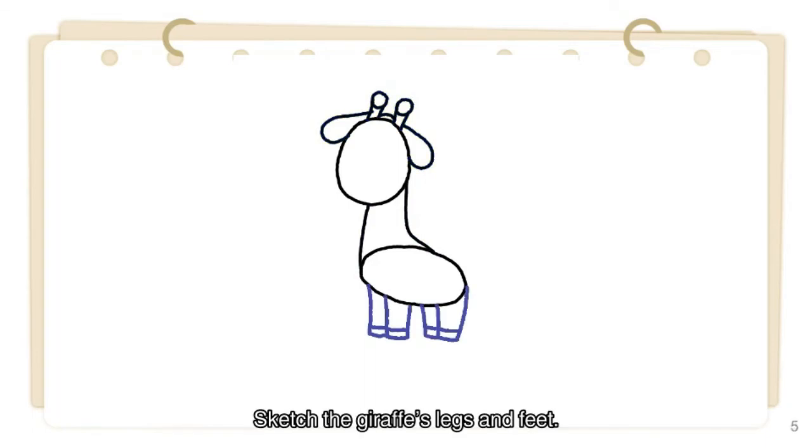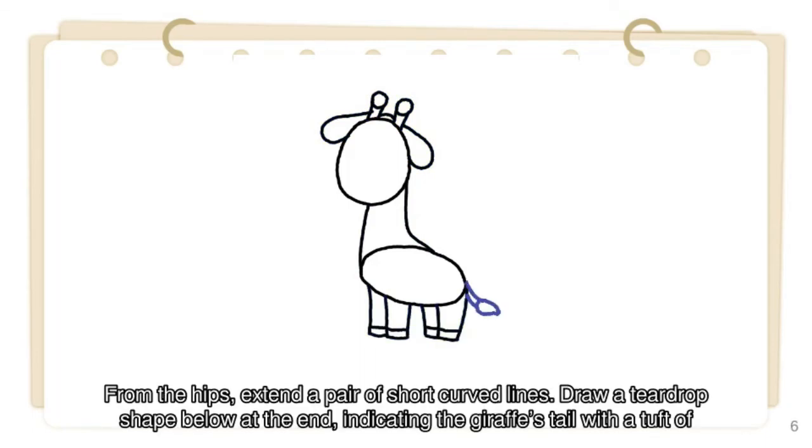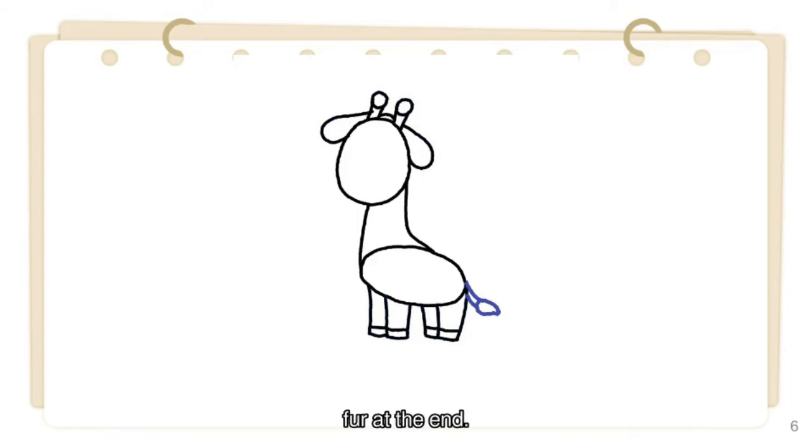Sketch the giraffe's legs and feet. From the hips, extend a pair of short curved lines. Draw a teardrop shape below at the end, indicating the giraffe's tail with a tuft of fur at the end.